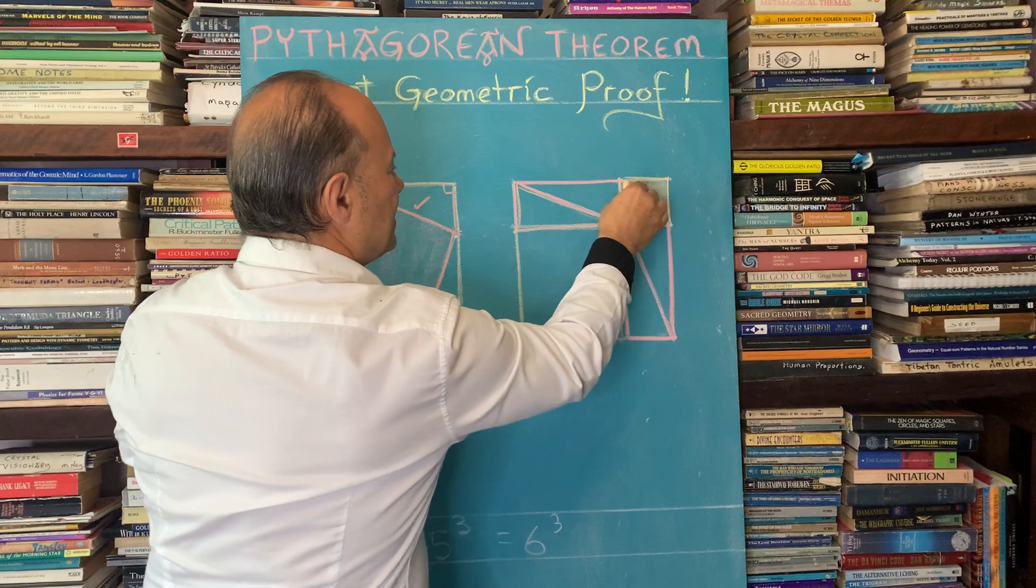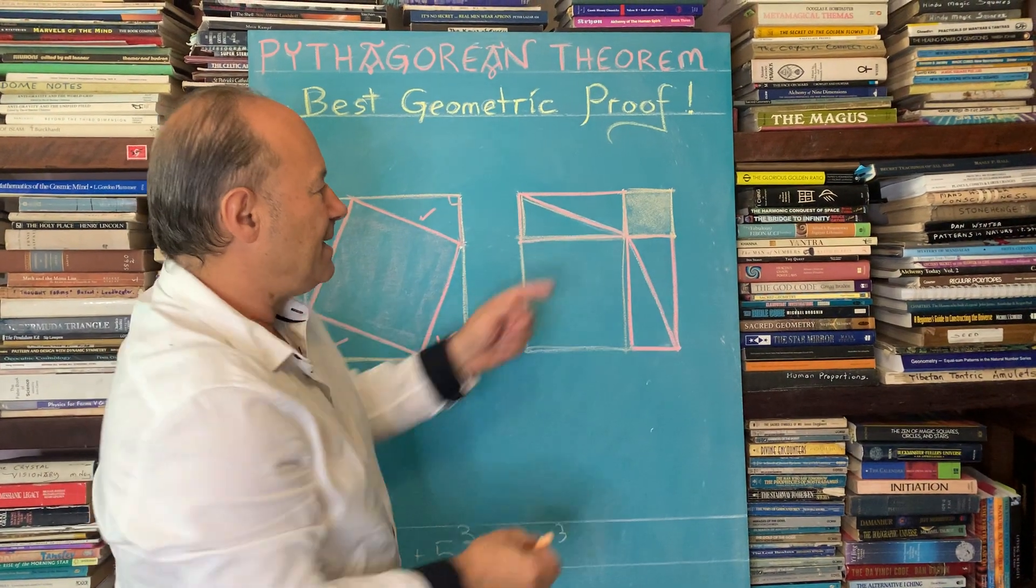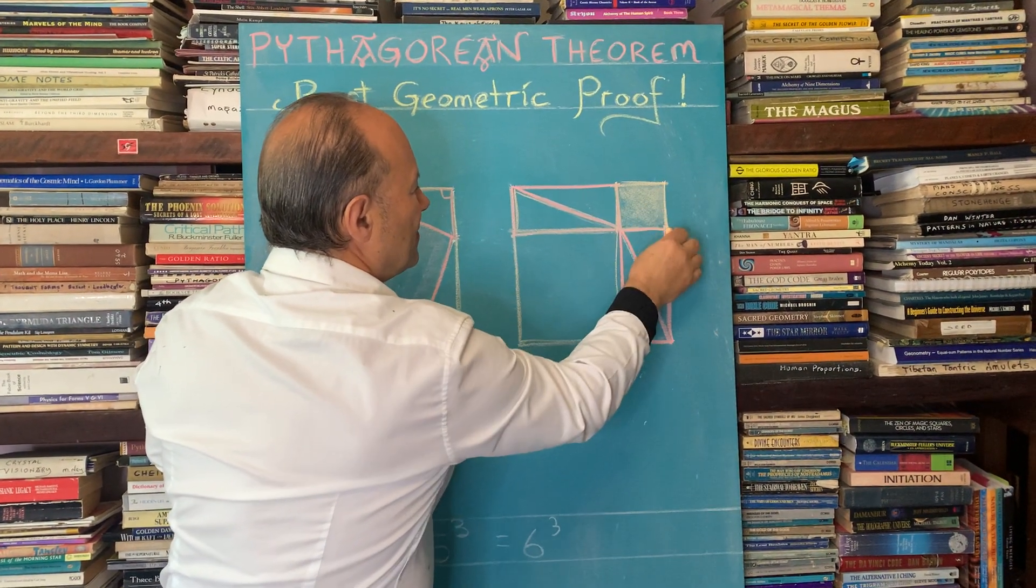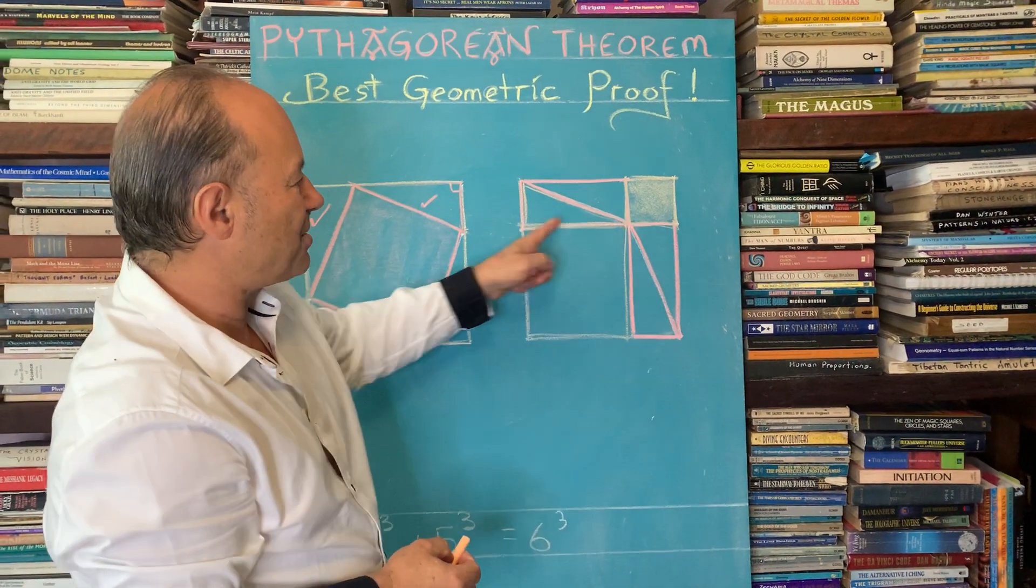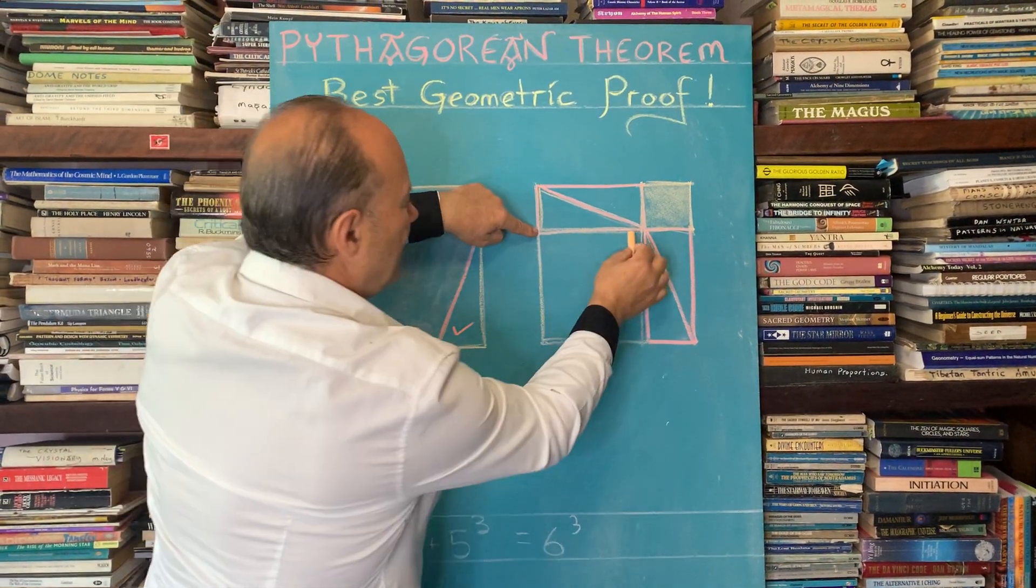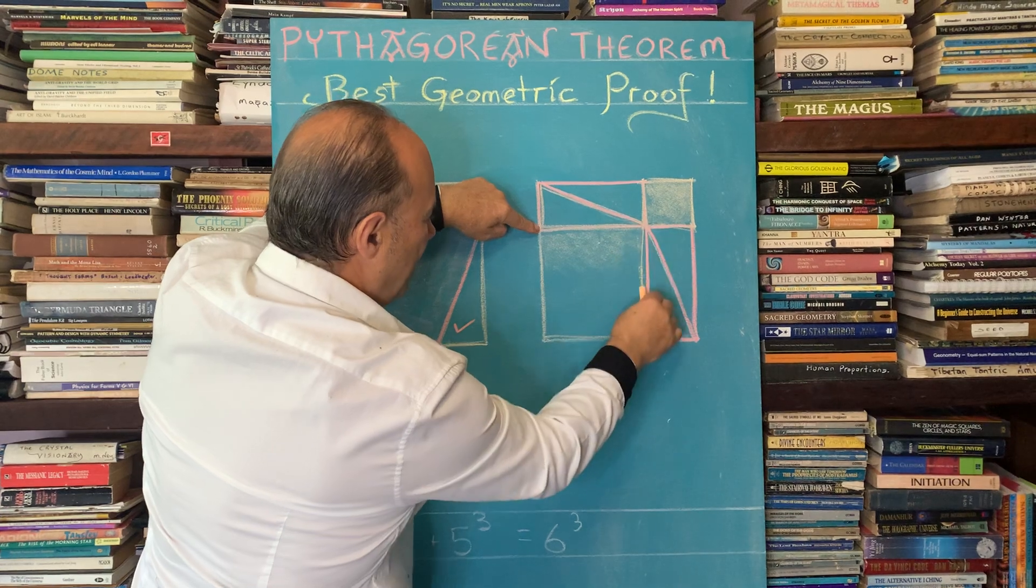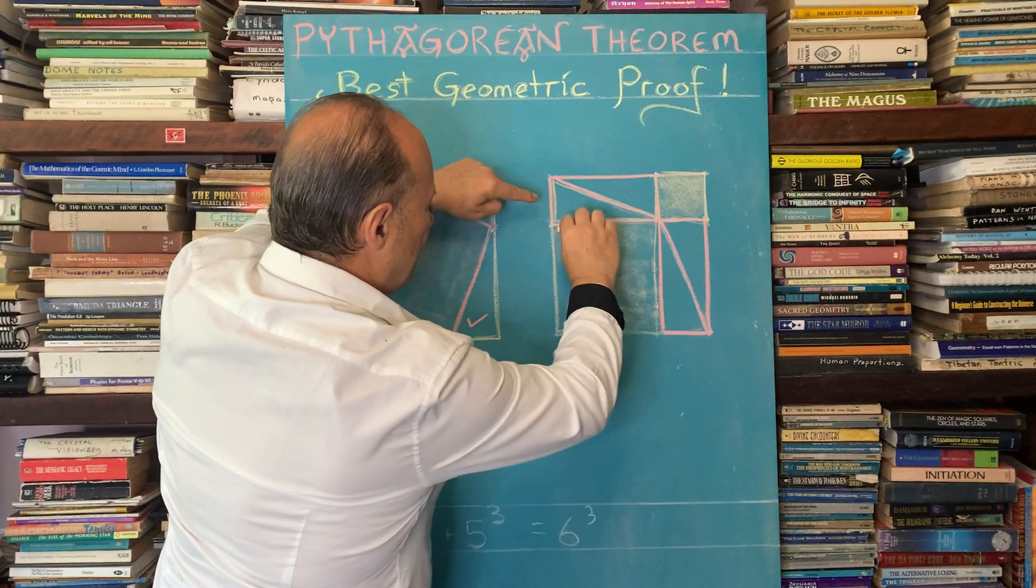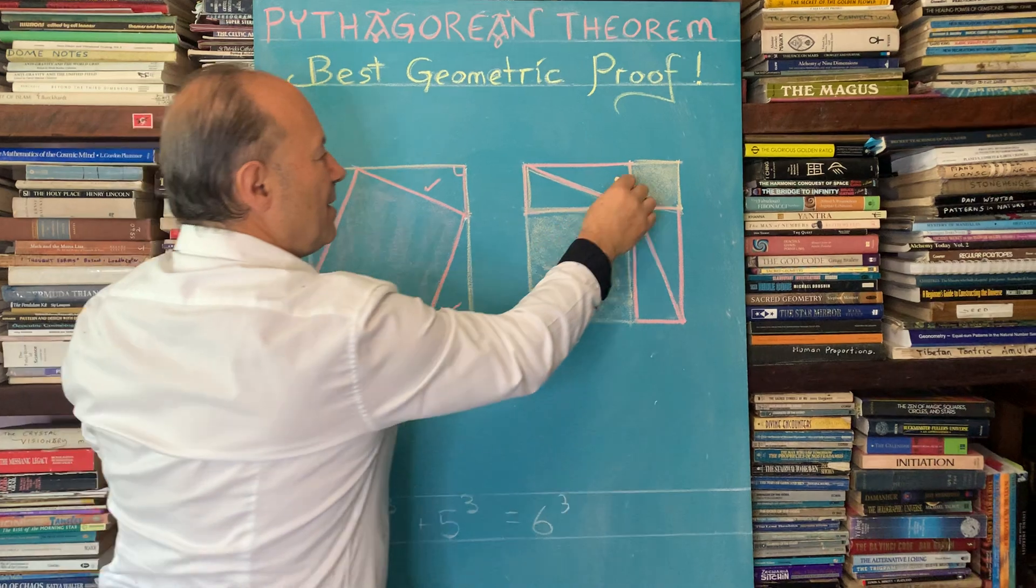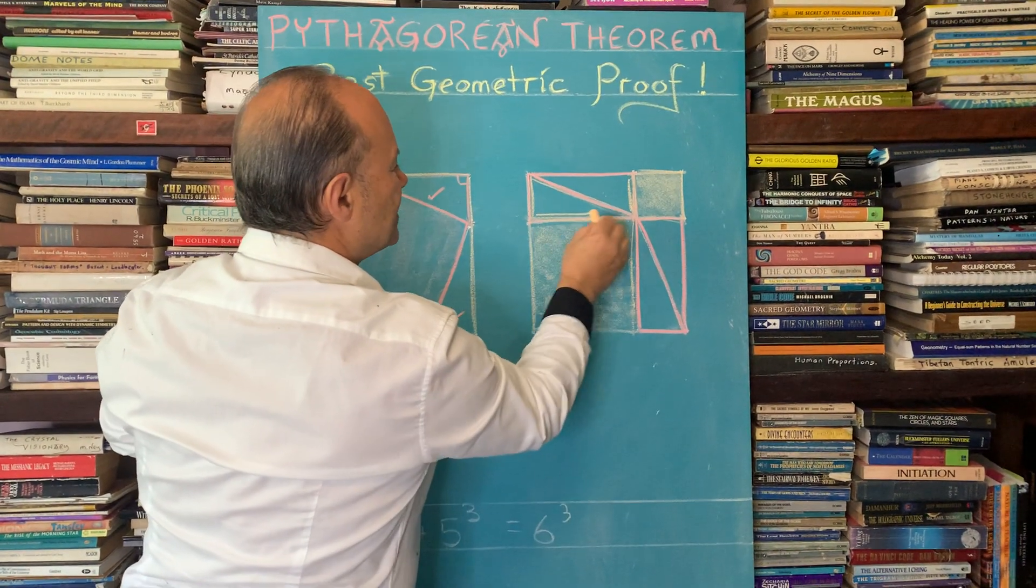So this area here is the square of this triangle, the square on the shorter side. But there's another shorter side along here, so this square here is the square on the other side. So we've done this side and we've done this side.